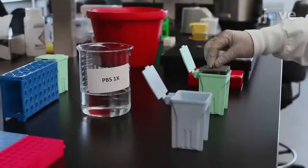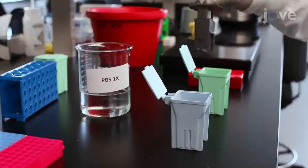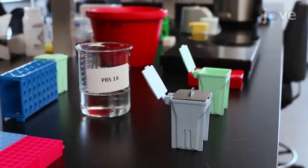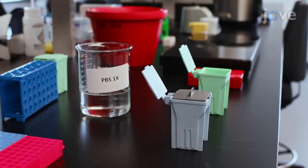After the slides have cooled in the cooker for 30 minutes, wash the samples two times for five minutes in fresh PBS per wash in a new Coplin jar.